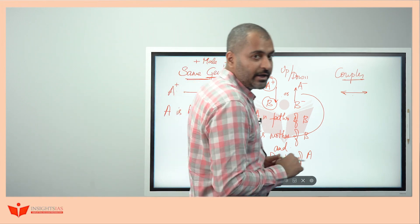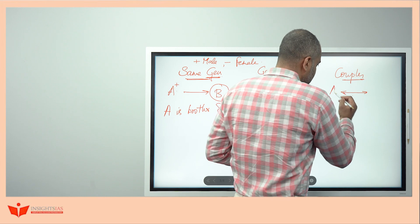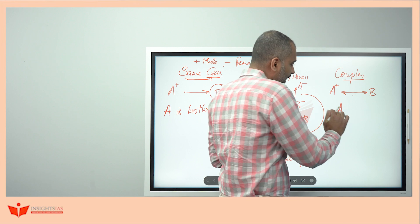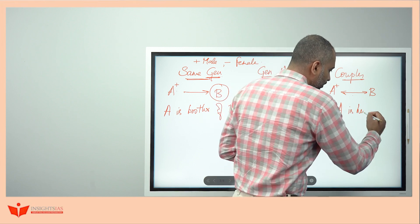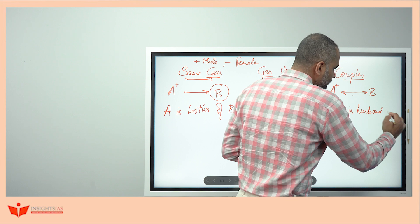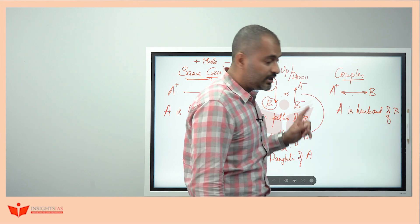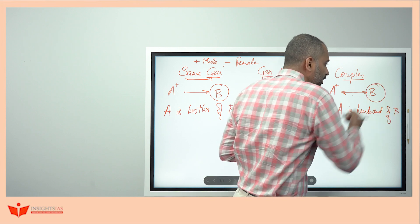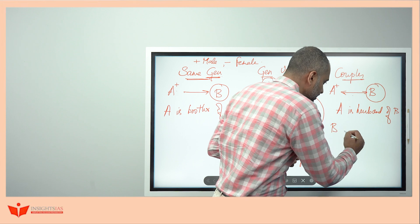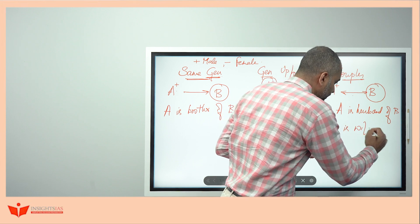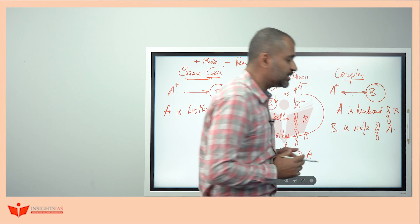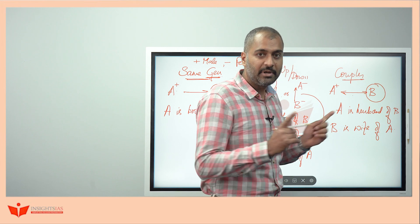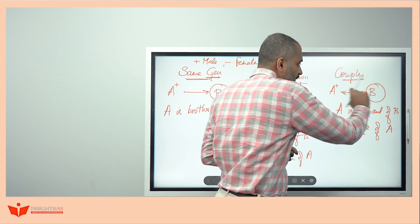Similarly, when it comes to couples, if A plus B — A is husband of B. In this case, if A is husband of B, without knowing the gender of B also, by default we can say B is wife of A. Even though we don't know the gender, they are couples. This is represented using a double-sided horizontal arrow.